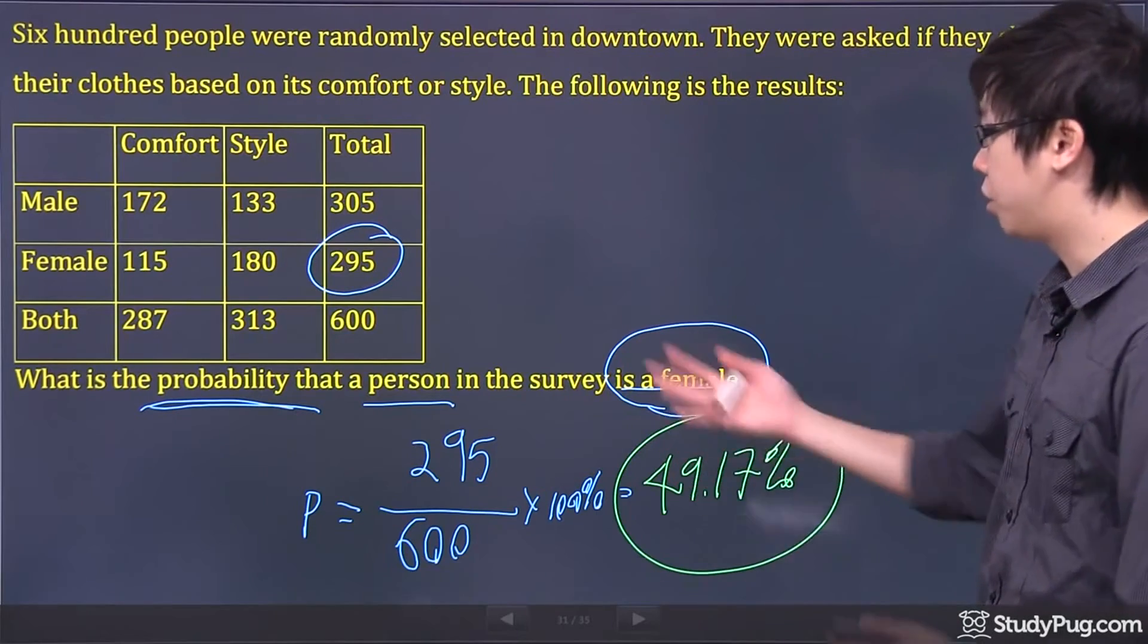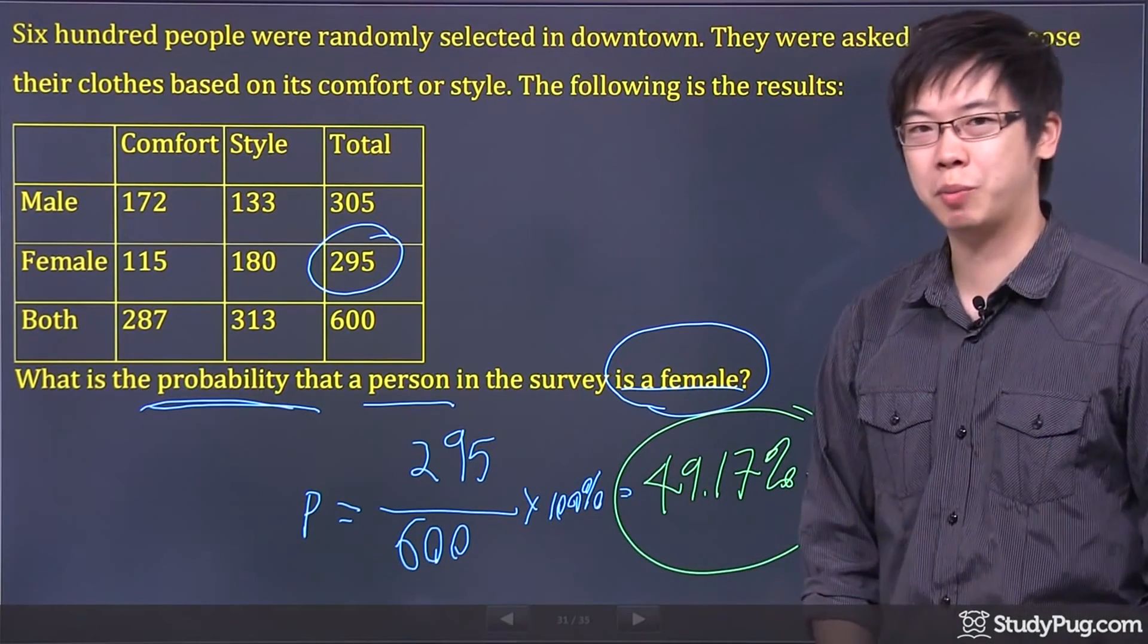That is the probability that a person in the survey is a female. Let's check on the next part of the question.